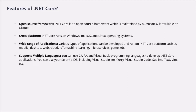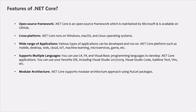.NET Core supports multiple languages. You can use C#, F#, or Visual Basic programming languages to develop .NET Core applications, and you can use your favorite IDE including Visual Studio, Visual Studio Code, Sublime, Vim, etc. .NET Core also supports a modular architecture approach using NuGet packages. There are different NuGet packages for various features that can be added to a .NET Core project as needed. Even the .NET Core library itself is provided as a NuGet package, which reduces the memory footprint, speeds up performance, and makes it easy to maintain.